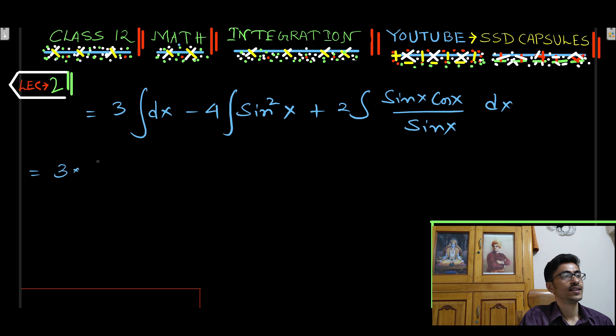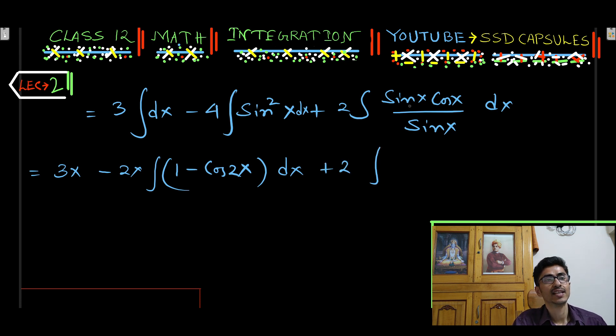So 3 integration dx means x minus here 2 into 2 sine squared x. So 2 sine squared x means 1 minus cos 2x dx. Here we have dx, I have done this mistake, we have to write dx plus 2 integral cos x dx plus c1 where c1 is arbitrary constant.